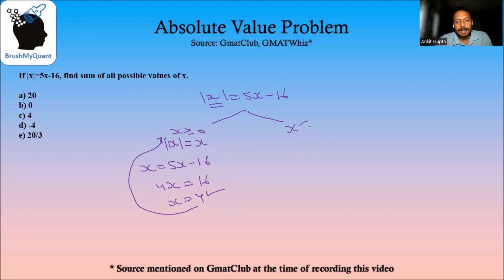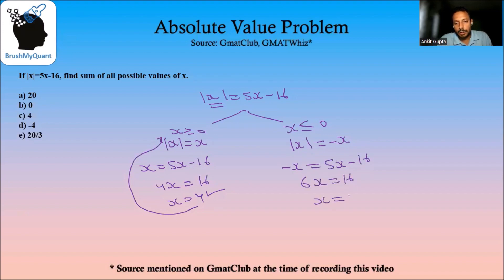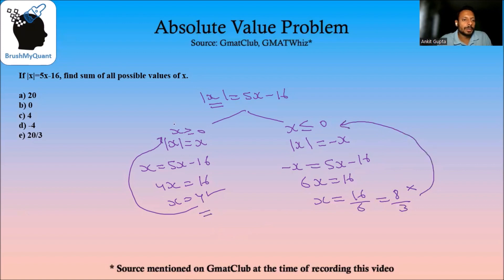In the second case, let's take x as less than or equal to 0. That means mod of x can be opened as minus x. So we'll have minus x is equal to 5x minus 16, or 6x is equal to 16, x is equal to 16 by 6, which is 8 by 3. Now this is not a correct solution because our condition was x is less than or equal to 0. So the solution is only x equal to 4, and the sum of all possible values of x is 4. The answer is option C.